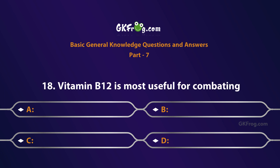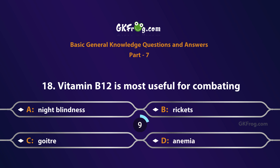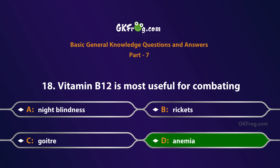Vitamin B12 is most useful for combating: A. Night blindness, B. Rickets, C. Goiter, D. Anemia. Correct answer is D. Anemia.